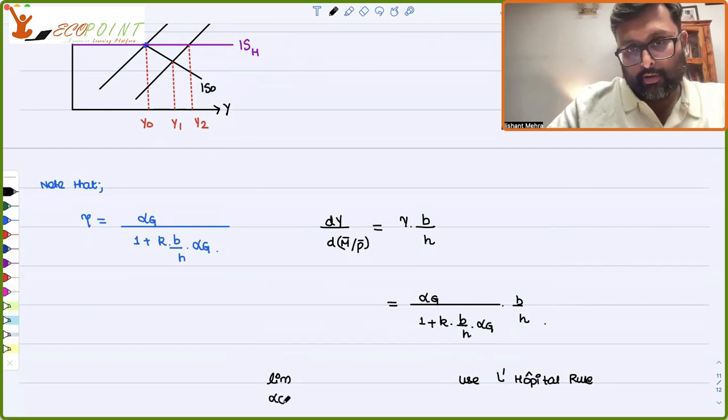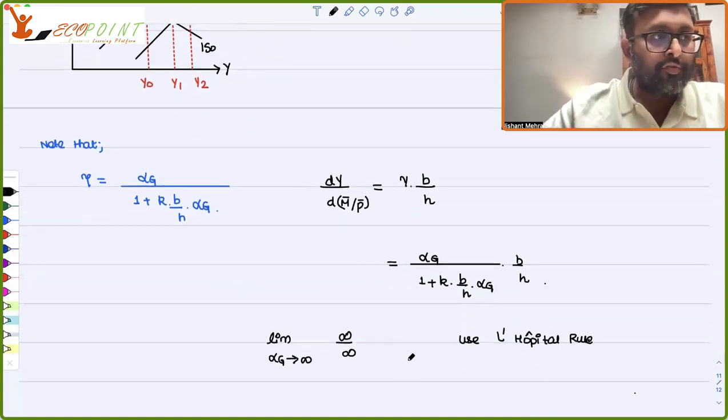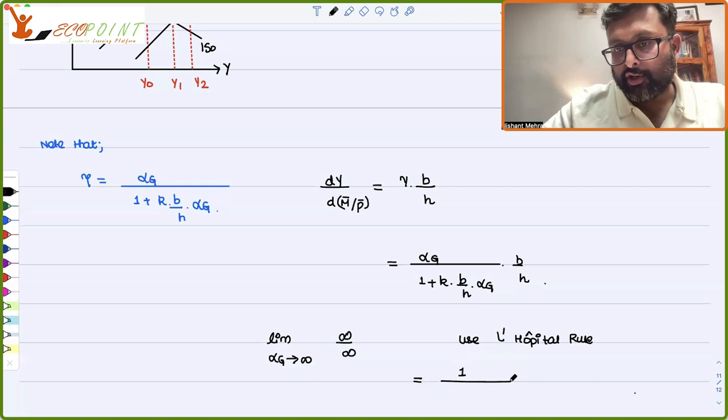So, if you put alpha G to infinity, what will happen? You will have infinity in the numerator and infinity in the denominator. So, it is an indeterminate form. You can use L'Hopital's rule. So, when you use L'Hopital's rule, so you differentiate numerator with respect to alpha G and denominator with respect to alpha G.